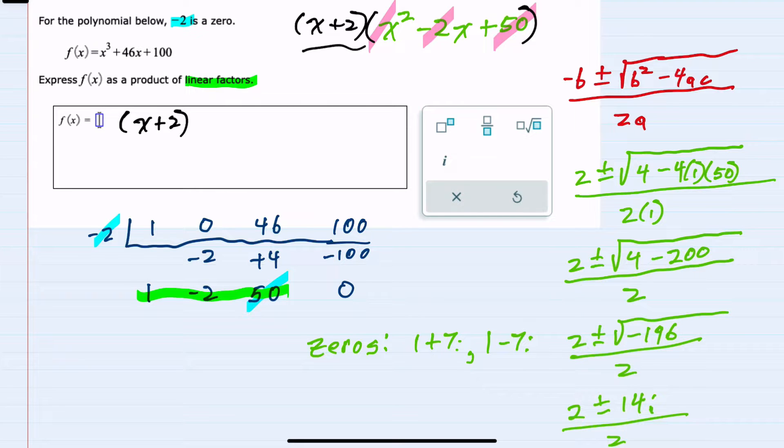And since we have these other zeros, I know that one of the factors will be x minus that first zero. So minus a 1 plus 7i. And the other one will be x minus the second zero, which is a 1 minus 7i.